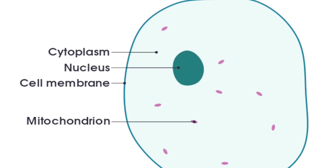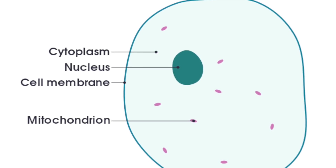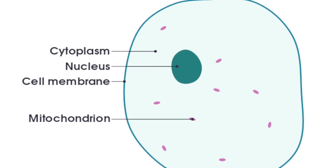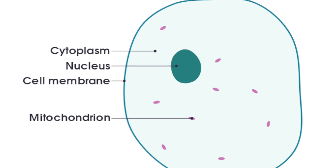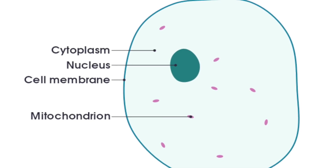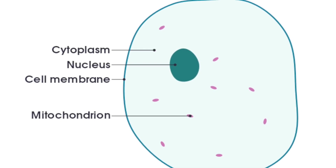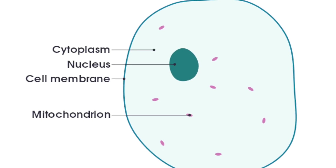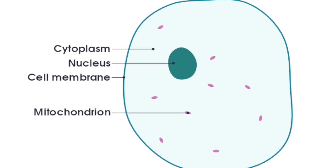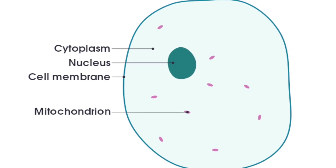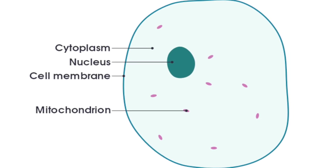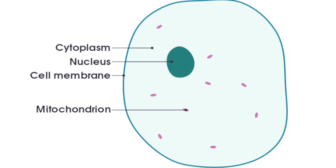Then we have the cytoplasm. The cytoplasm is a liquid gel where all of the chemical reactions needed to survive take place. Then we have the cell membrane, and the cell membrane controls what substances enter and leave the cell.